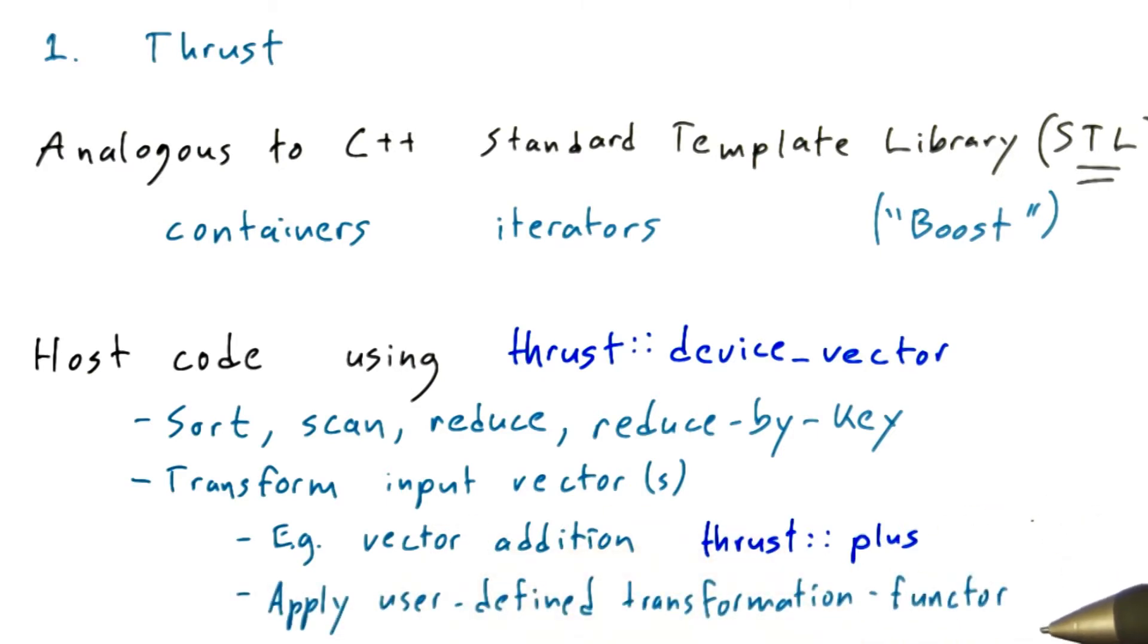Or you can apply a user-defined transformation using a functor. This is a chunk of code that you give thrust and tell it, run this on every element or on the collection of input and output elements that I'm interested in.